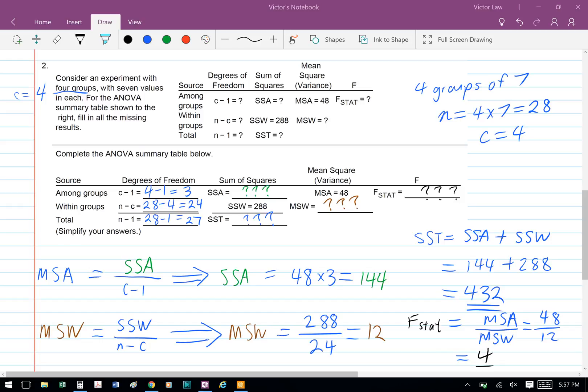And for the F statistic, the formula is MSA divided by MSW. We have 48 divided by 12, so the F statistic equals 4.